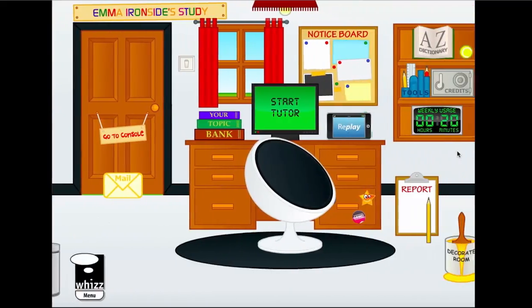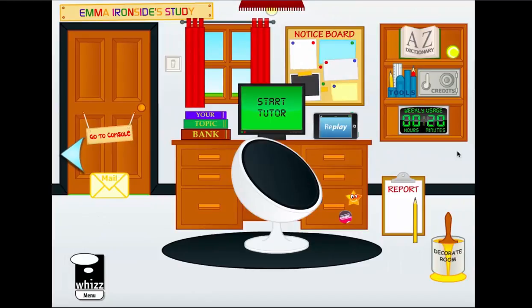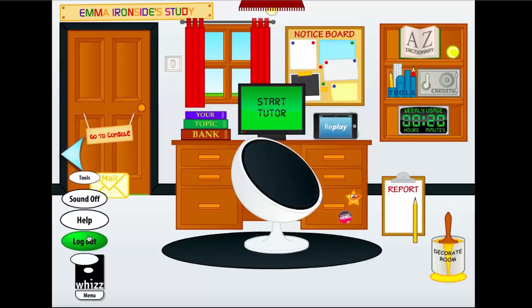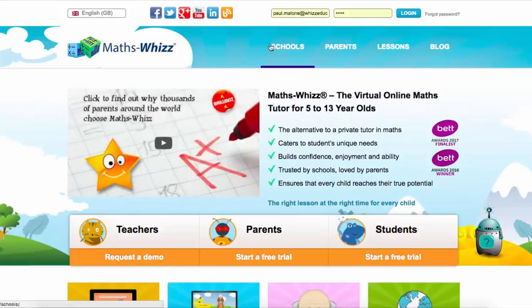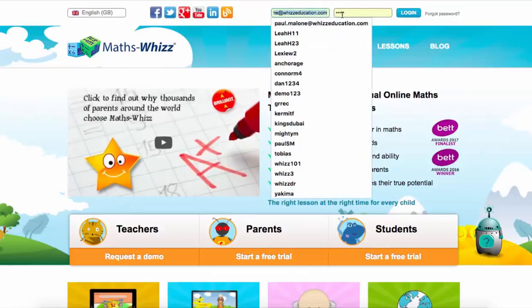You can explore that at your own pace with the online logins which can be provided for you. But now let's have a look at the reporting — what Duncan sees as a parent. How does he know that Emma's progressing in her mathematical journey? In order to do that, we're going to log out here and go into Duncan's account.